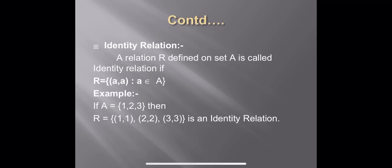Remember one thing: there are three elements in set A, so there will be exactly three ordered pairs in the identity relation — not more than this and not less than this. Thank you.